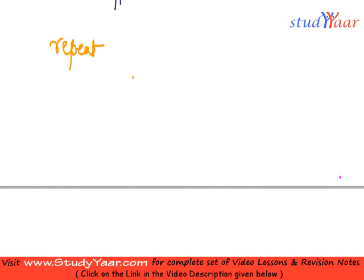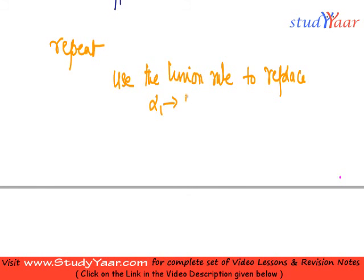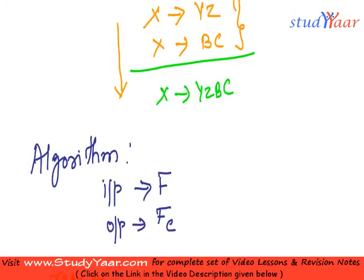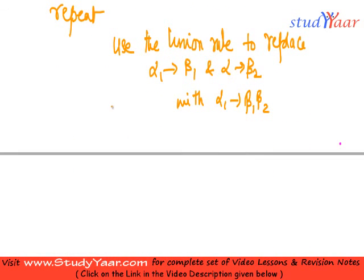I write the algorithm as: repeat the following steps. First, use the union rule to replace α₁ → β₁ and α₁ → β₂ with α₁ → β₁β₂ — like what we did in the example where X → YZ and X → BC become X → YZBC. This is the first step.